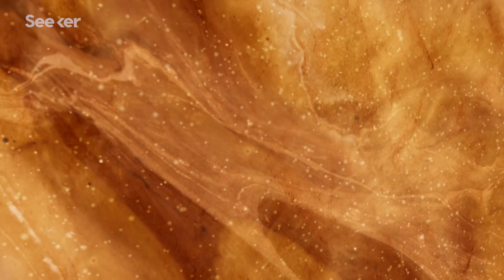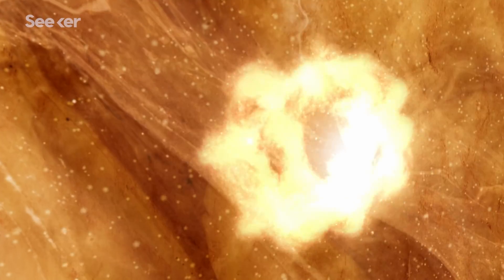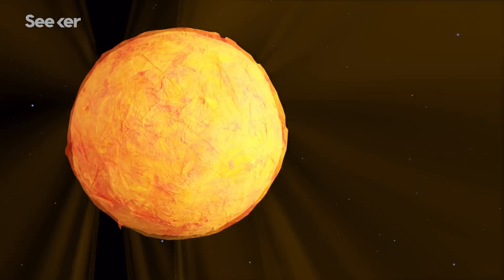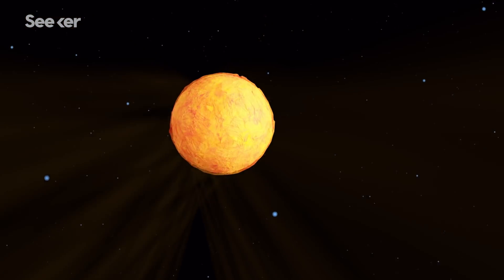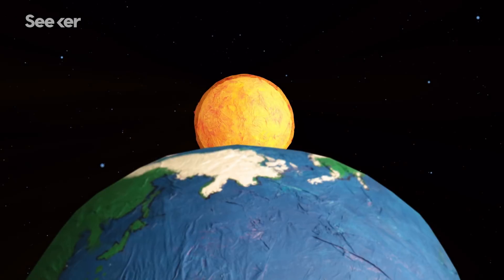This is the scorching section of the Sun where nuclear fusion occurs. The process releases massive amounts of energy, which eventually makes its way into space. But just a fraction of that energy reaches Earth.